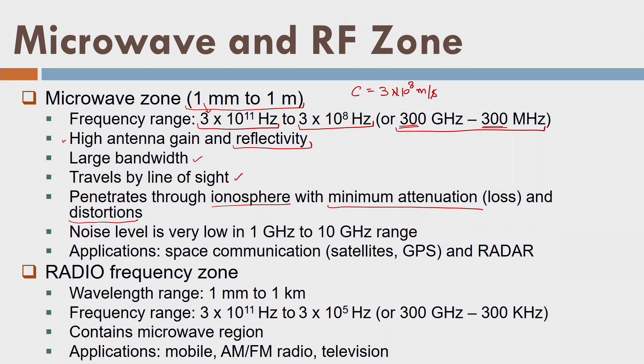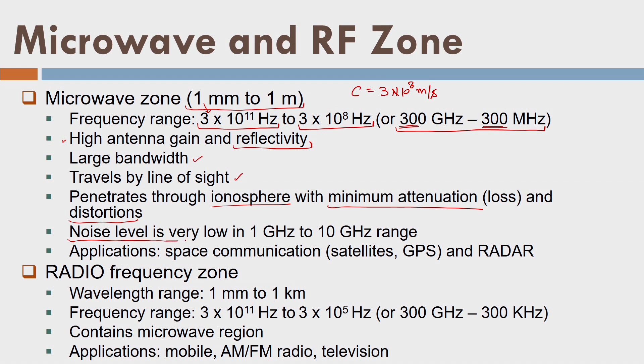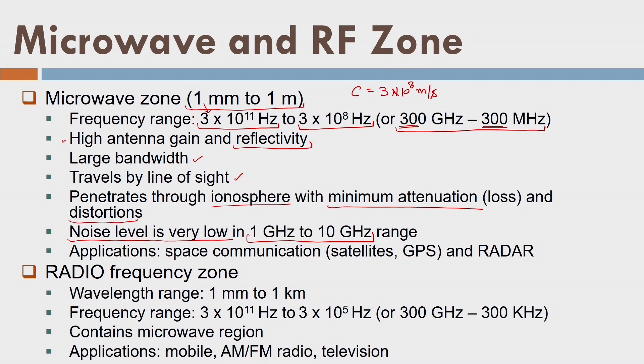Attenuation is the reduction in the magnitude of the signal. Distortion is a change in the shape of the signal. In the microwave region, the shape of the signal will change minimally and the magnitude will be reduced by a minimum quantity. Finally, the noise level is very low in the range of 1 GHz to 10 GHz within the microwave region. Even if the signal is of low strength we can still detect it, because the noise level is minimum — the signal will not be confused with noise.